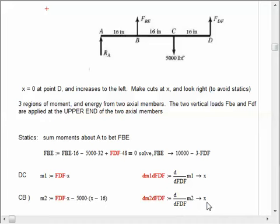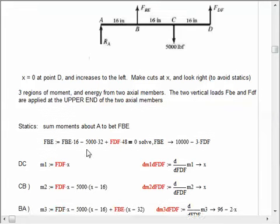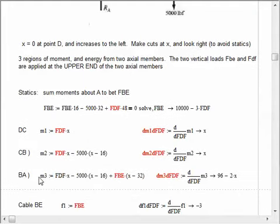Now, I'm going to get something a little more sophisticated here because this FBE is written in terms of FDF, and I'll show that in a moment. So, moment 3 is still the FDF times X minus the 5,000 times X minus 16, plus the FBE times X minus 32. But FBE will have this thing right here substituted in for it when I take the partial. MathCad will substitute and expand. And when I take the partial, the partial comes out to be 96 minus 2 times X. Let me just show you. I can do a little bit of interactive and show you how that happens.